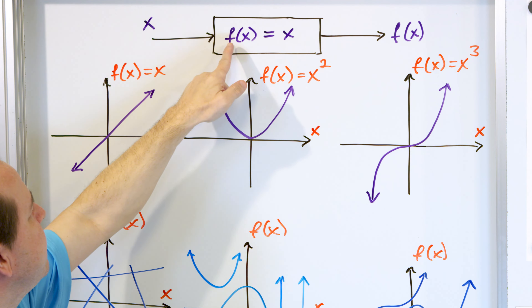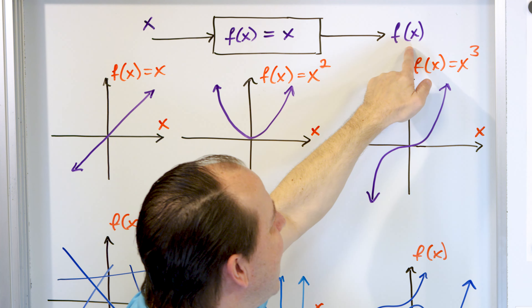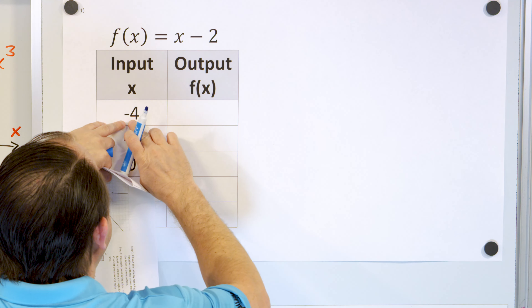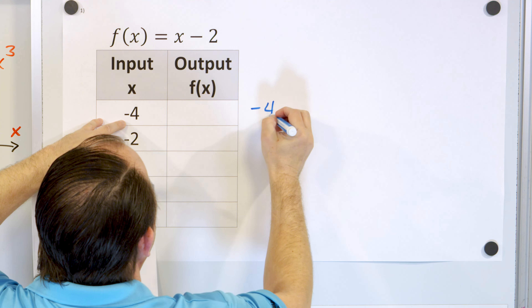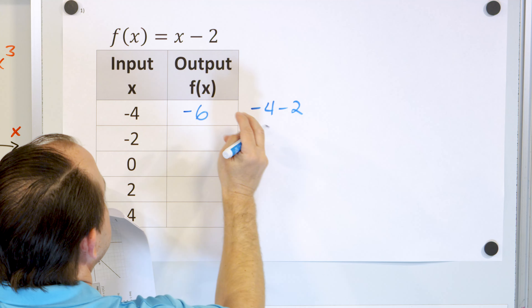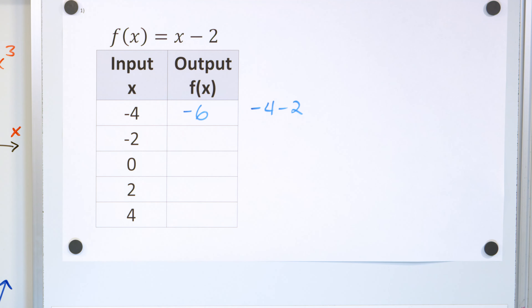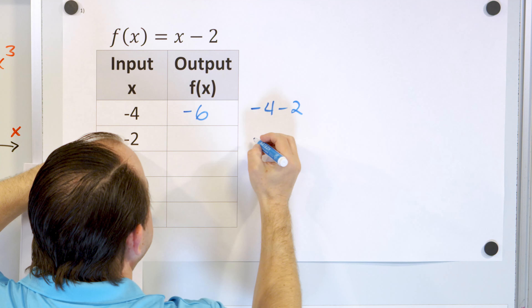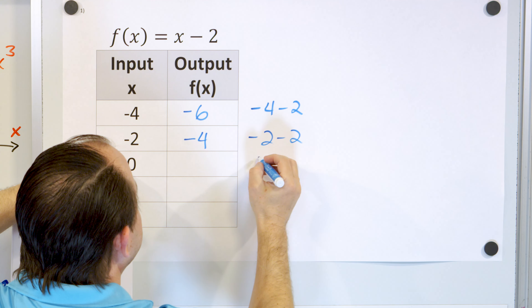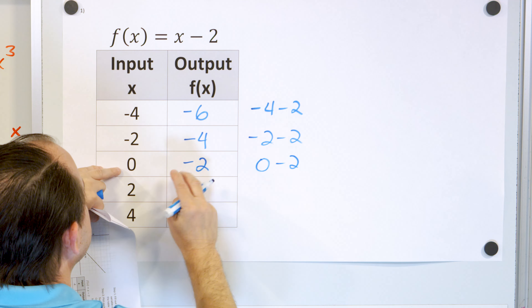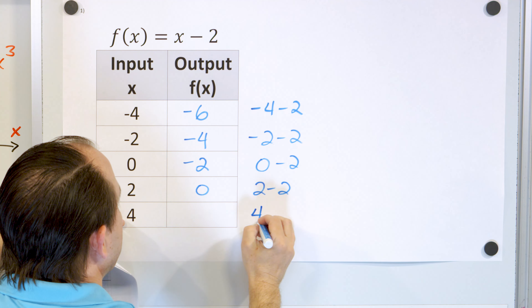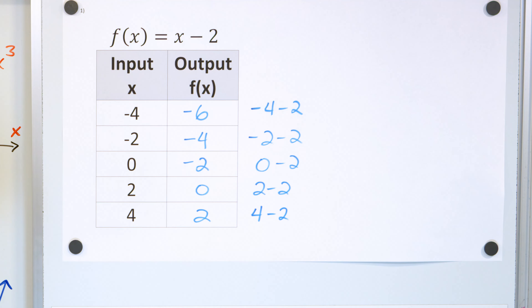Now, when the rubber meets the road, how do we actually graph it? We have inputs and outputs. The input number goes in, the calculation happens, the output comes out — we call it f of x. If you take negative 4 and stick it in f of x equals x minus 2, you have negative 4 minus 2, which is negative 6. If you put negative 2 in, negative 2 minus 2 is negative 4. If you put 0 in, 0 minus 2 gives negative 2. If you put 2 in, 2 minus 2 gives 0. If you put 4 in, 4 minus 2 gives 2.